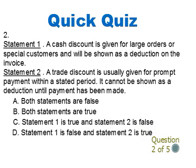Question 2. Statement 1: A cash discount is given for large orders or special customers, and will be shown as a deduction on the invoice. Statement 2: A trade discount is usually given for prompt payment within a stated period; it cannot be shown as a deduction until payment has been made. A. Both statements are false. B. Both statements are true. C. Statement 1 is true and statement 2 is false. D. Statement 1 is false and statement 2 is true.